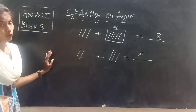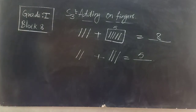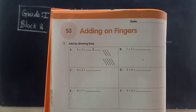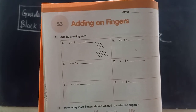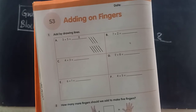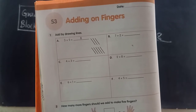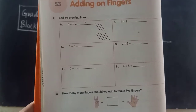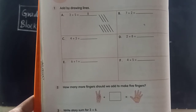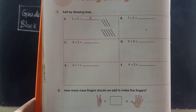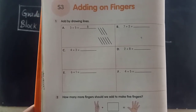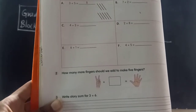So it is very easy to add numbers on our fingers. Now everyone open volume page 46. This is page 46 — adding on fingers. Add by drawing lines; you can draw lines imagining those are your fingers. Second question: how many more fingers should we add to make five fingers? Already two fingers are there — how many more do you need to make five? After two, you have to count.